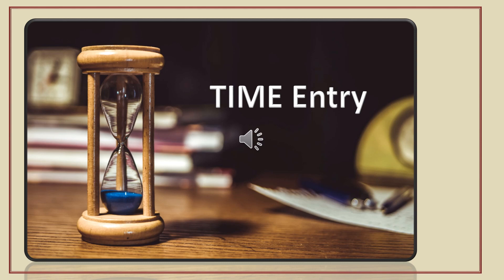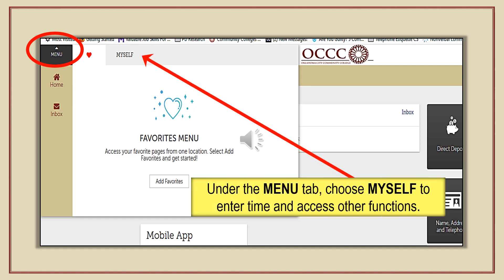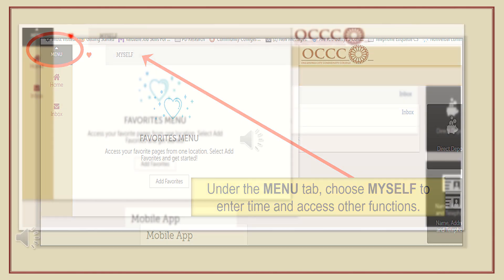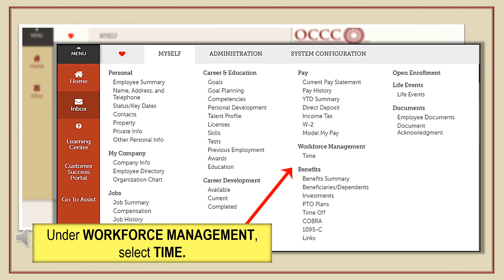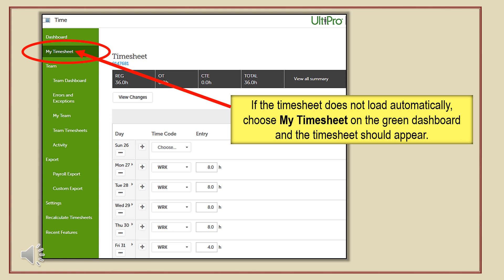Let's get started and learn how to enter time. From the main menu, employees will access Time and Time Off from the Myself tab. Under Myself, find Workforce Management and click Time. There are two types of timesheets available to non-exempt employees: the duration timesheet for full-time employees, and the hourly timesheet for employees who are part-time or student workers. To access the employee timesheet, a green employee dashboard will appear on the left side of the screen — choose My Timesheet.